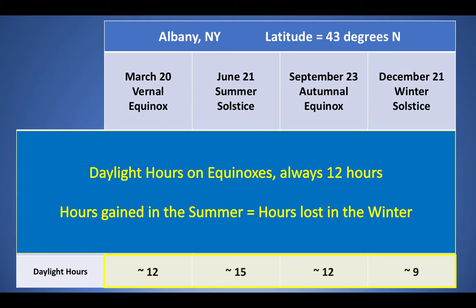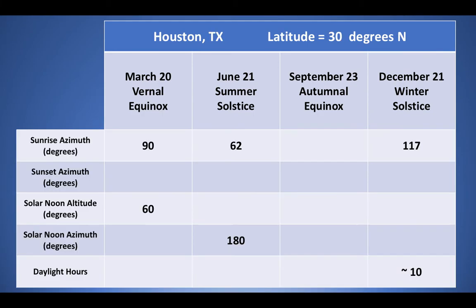Now let's look at an example using Houston, Texas — which has a latitude of 30 degrees north, much further south than Albany, New York at 43 degrees north. I've put some data into this data table, and with just these six pieces of data — really just five of them — we can figure out the rest of the table. That's going to be part of your assignment for today.